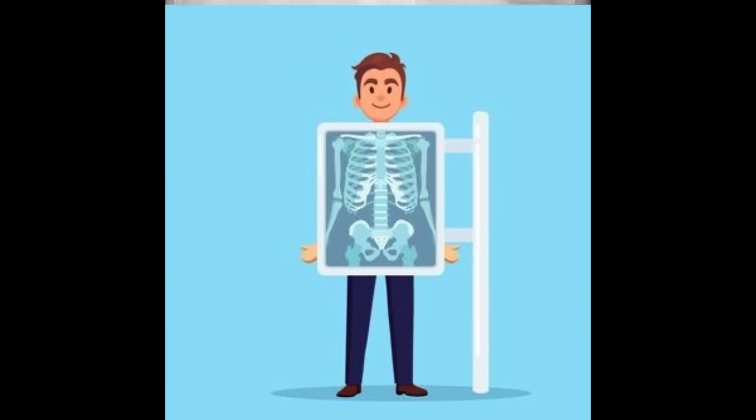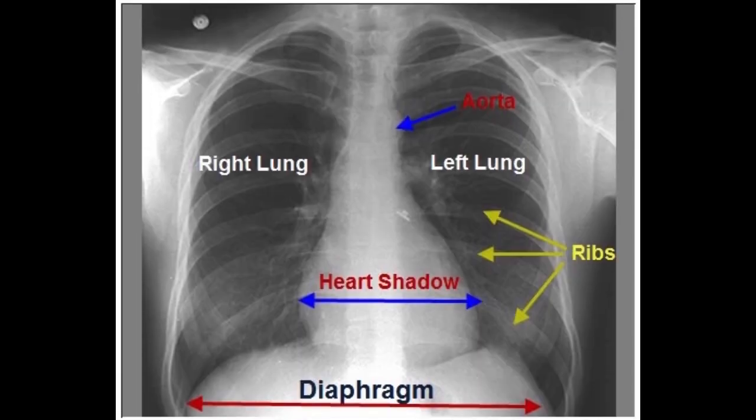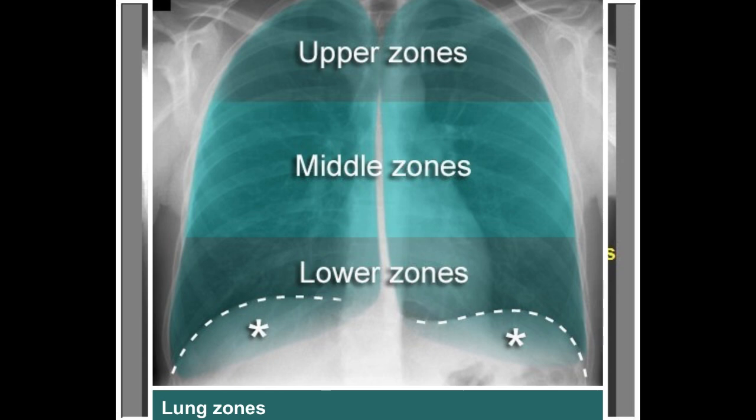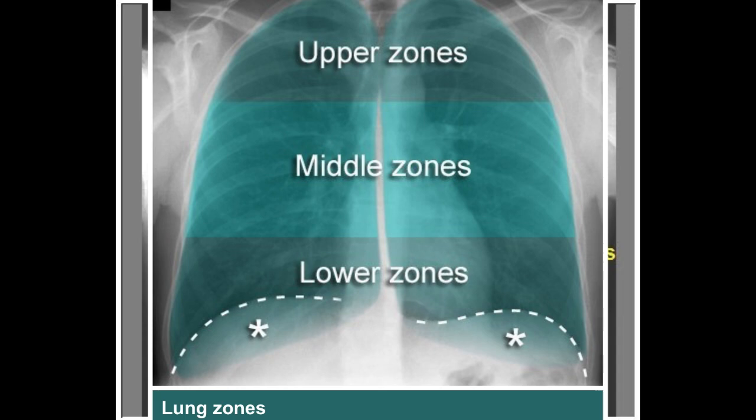For airway and mediastinum: check that the trachea is central, check for the carina at the T4–T5 level, and the mediastinum should not be widened. For lungs and pleura: check that the lungs are clear with no opacities. Vascular markings should taper to the periphery, and pleural spaces should be clear — the costophrenic and cardiophrenic angles should be sharp.